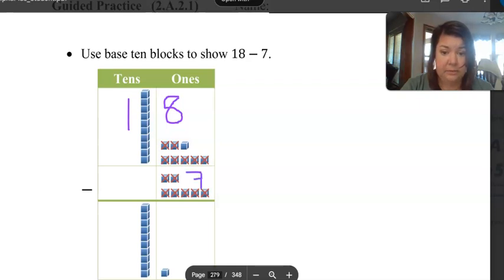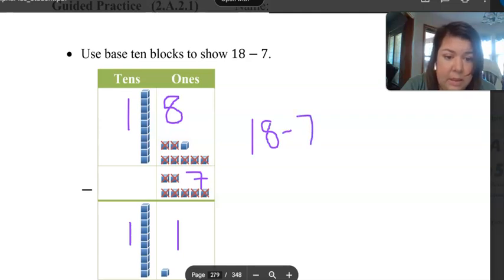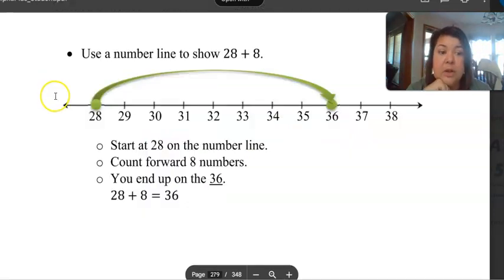So then we have eight minus seven, and that leaves us with one in the ones column, and we still have one of these left, so that's one. So eighteen minus seven is eleven. It's very hard to write on a computer, I always tell you guys. Okay, you can also do this exact same thing on a number line.